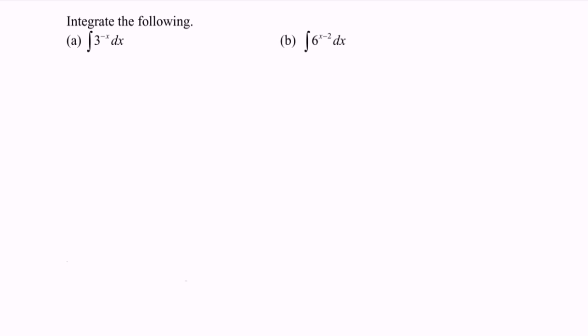Next we have B. 6 to the power of x minus 2 over 1, ln 6 plus c. Rewrite the situation. 6 to the power of x minus 2 over ln 6 plus c.